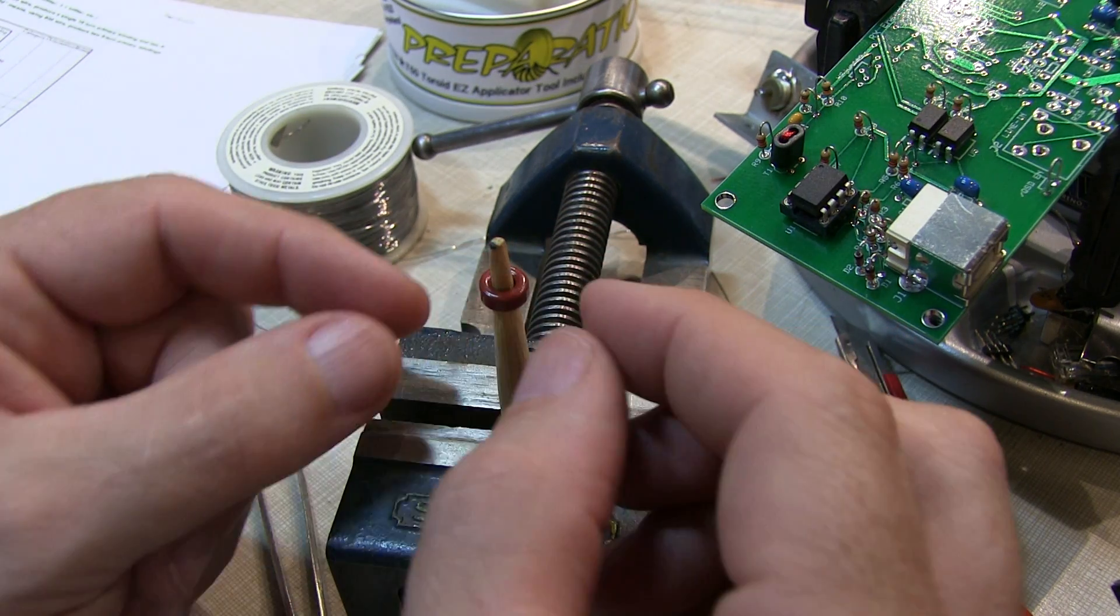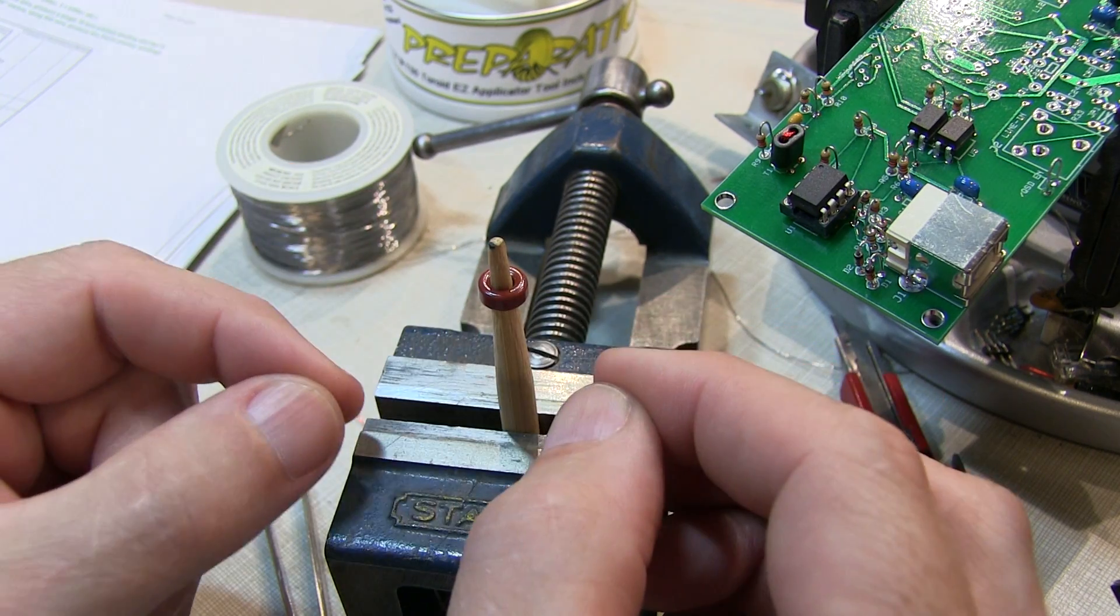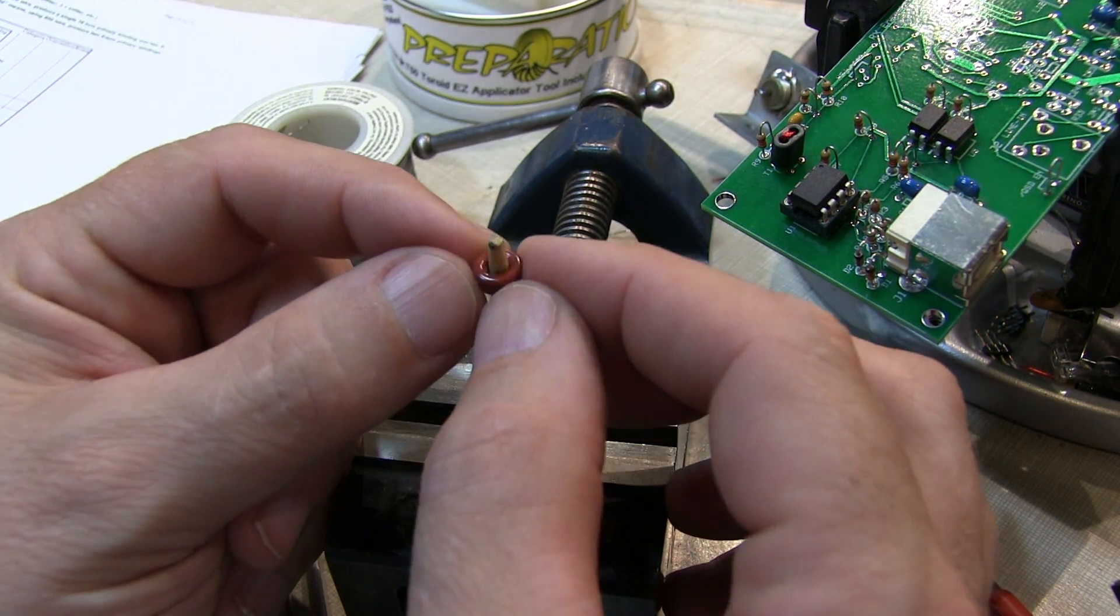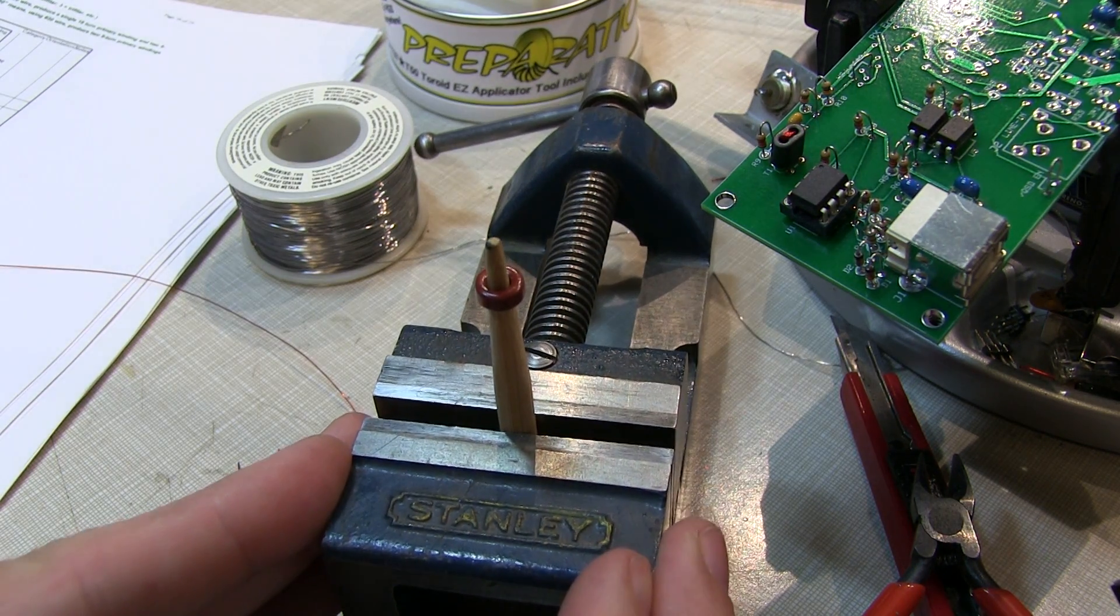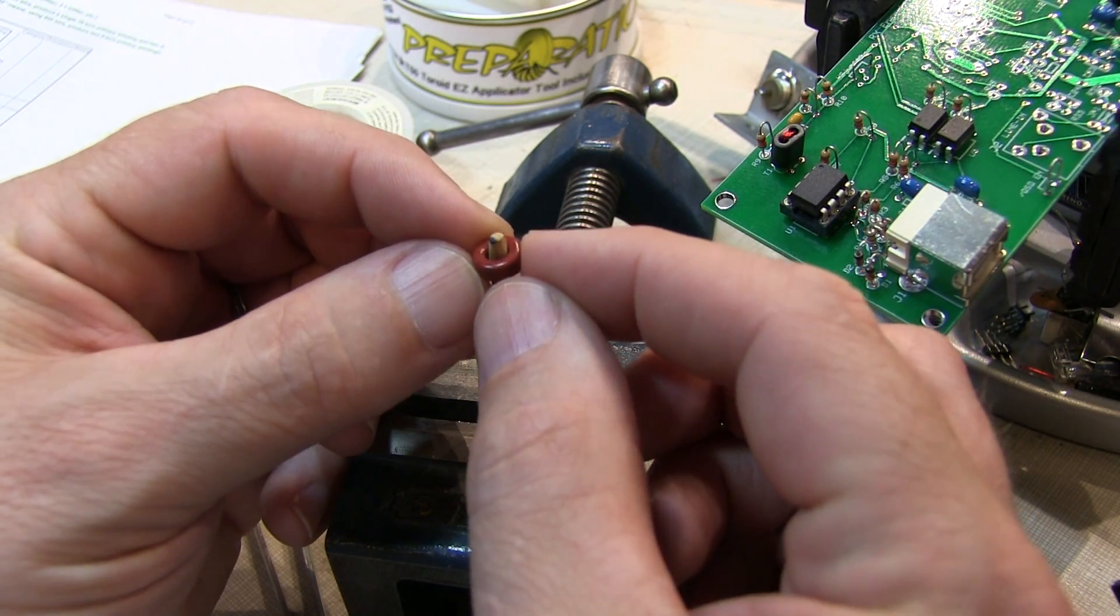But the toroid can sit right over there and as you push it down on there it can be used to kind of really hold the windings in place as you slip the wires through. So I found this works really well, especially if you can clamp it into something that is fairly stationary, like this nice heavy machinist vise that I have here.